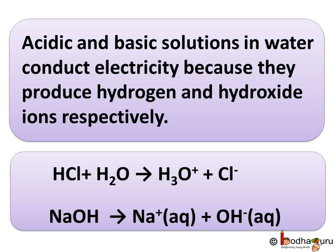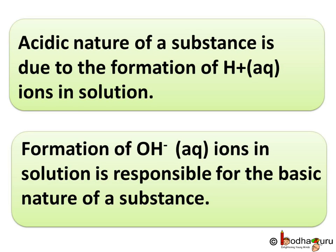To sum up what we learnt today: acidic and basic solutions in water conduct electricity because they produce hydrogen and hydroxide ions respectively. For example, HCl + H₂O gives H₃O⁺ + Cl⁻, and NaOH gives Na⁺ + OH⁻. The acidic nature of a substance is due to the formation of hydrogen ions in solution, whereas formation of hydroxide ions is responsible for the basic nature of a substance. That's all for now. Bye bye.